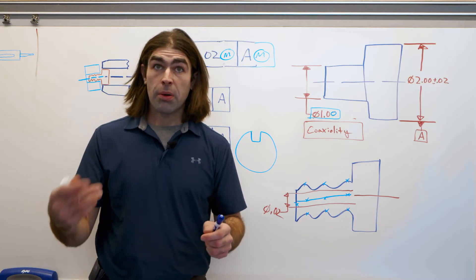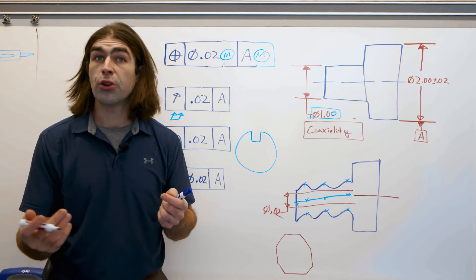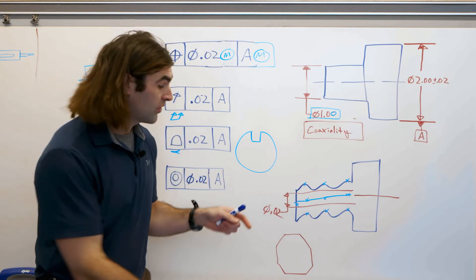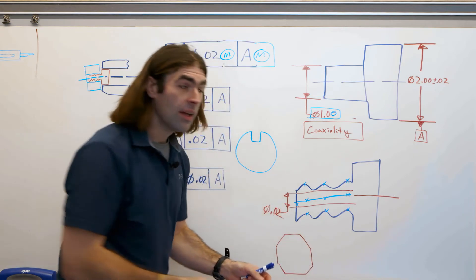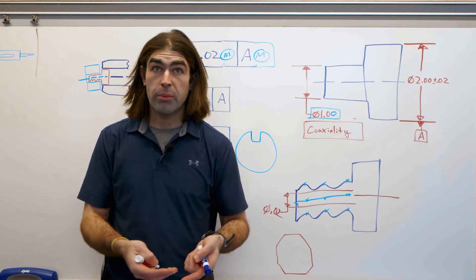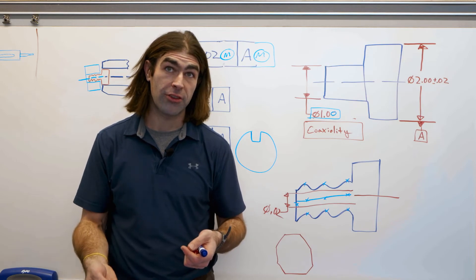So a part shaped like this, an octagon, could be concentric to a cylinder because if you take any two points, they could be in the middle of the part. So parts that have even number of sides can be concentric. It would not pass a run out check.